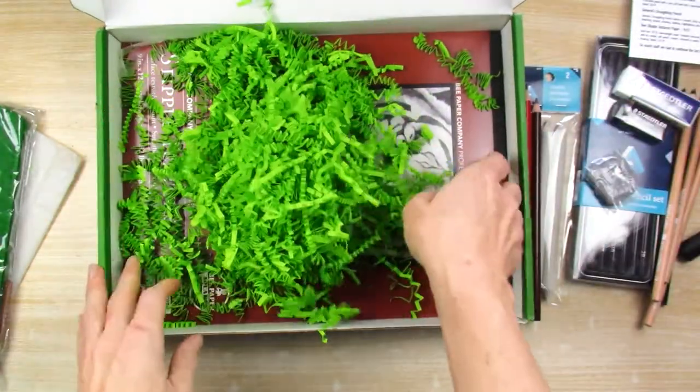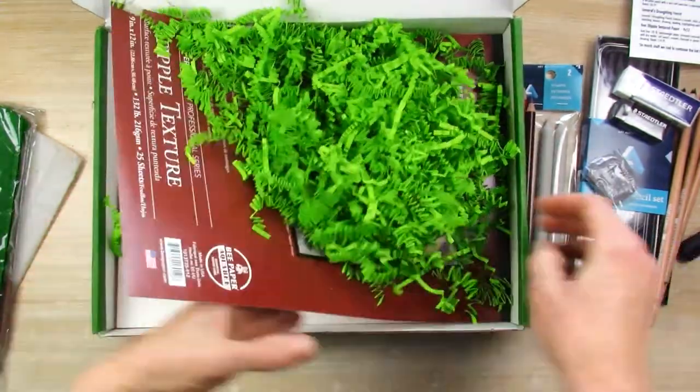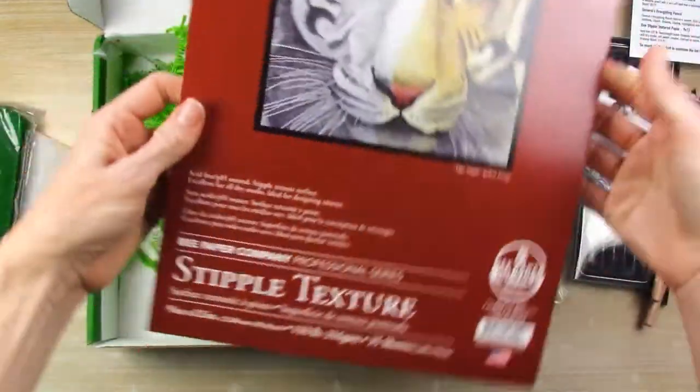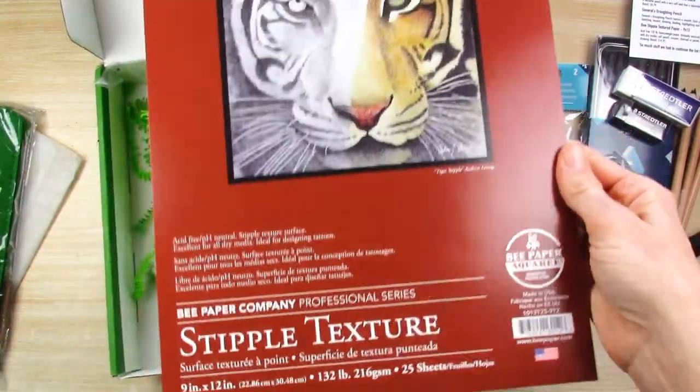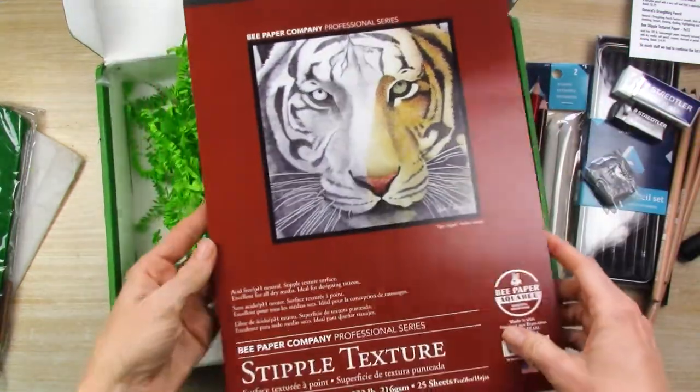And this paper. Last thing. How do we get that out of there? That's really stuffed in there. Okay. Stipple texture. Bee Paper Company. 9x12. 132 pounds. That's thick for drawing paper. That's cool.